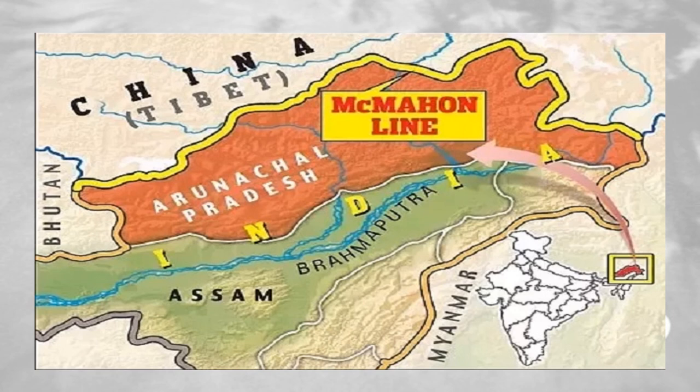The conflict stretches back to at least 1914, when representatives from Britain, the Republic of China and Tibet gathered in Shimla to negotiate a treaty that would determine the status of Tibet and effectively settle the borders between China and British India. The Chinese, objecting to proposed terms that would allow Tibet to be autonomous and remain under China's control, refused to sign the deal. But Britain and Tibet signed a treaty establishing what would be called the McMahon Line, named after a British colonial official.